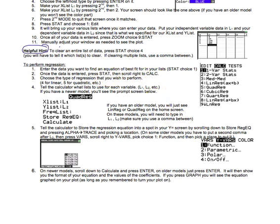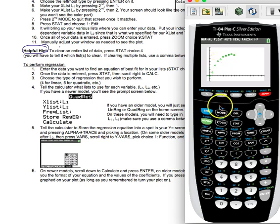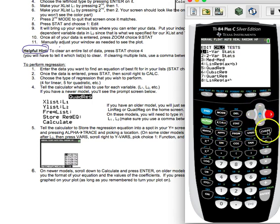So stat, and there's calculate right there. And we've got lots of choices, but the one we want this time is quadratic regression. So if we wanted linear regression, we would choose choice four. This time we're choosing choice five. So choice five.